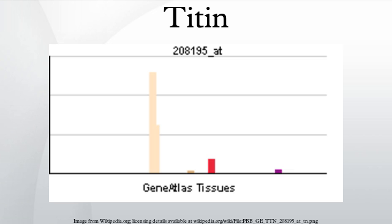Titin interacts with many sarcomeric proteins including, in the Z-line region: telethonin and alpha-actinin; in the I-band region: calpain-3 and obscurin; and in the M-line region: myosin binding protein C, calmodulin 1, CAPN3, and MURF1.